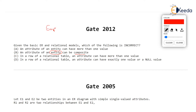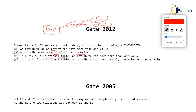Option C states: in a row of a relational table, an attribute can have more than one value. This is incorrect. The rule is that every column of a relational table must contain atomic values, so storing multiple phone numbers separated by commas in one cell is not allowed.